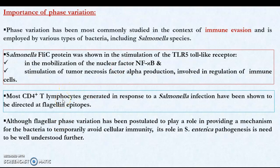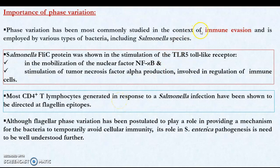Most T lymphocytes, especially CD4+ T lymphocytes, generated against Salmonella infection are directed towards the Salmonella flagellin epitopes. So flagellin epitopes are capable of eliciting the immune response even with respect to T lymphocytes. If the host generates an immune response, the bacteria evade it by switching flagellin proteins from one type to the other. The host then takes time to mount a new immune response, and during that time the bacteria are able to multiply and survive in the host system.